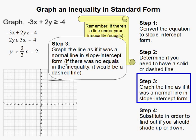Then we just graph the line as if it was a normal slope-intercept form line, ignoring the symbol, just like if it was y equals mx plus b.